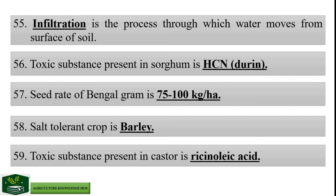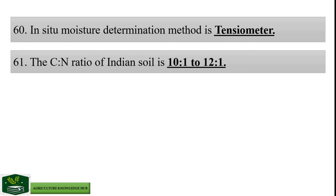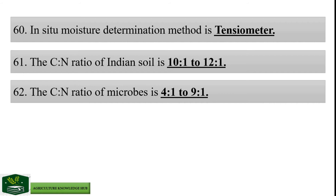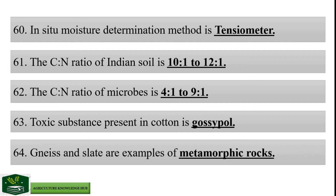In-situ moisture determination method is tensiometer. The C:N ratio of Indian soil is 10:1 to 12:1. The C:N ratio of microbes is 4:1 to 9:1. Toxic substance present in cotton is gossypol. Gneiss and slate are examples of metamorphic rocks.